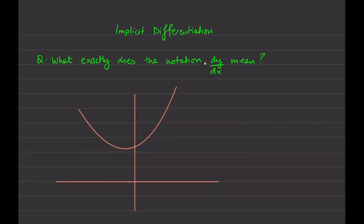Hey guys, this is a talk on implicit differentiation, hopefully this puts a little more color on things. We have to start with understanding what this notation exactly means. Up until now, all we've said is dy/dx means find the derivative of y, and that really has been about it.